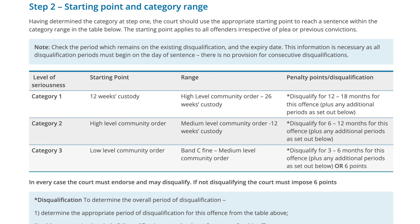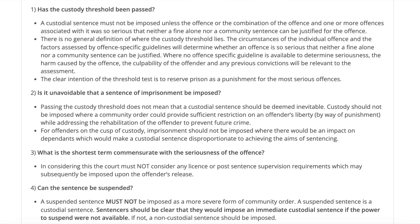For Category 2, the starting point is a high level community order, with a range from a medium level community order up to 12 weeks' custody, plus a disqualification period. Where custody is open to the court, it must consider the custody threshold: a custodial sentence must not be imposed unless the offence, or combination of offences associated with it, was so serious that neither a fine alone nor a community sentence can be justified.